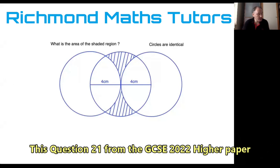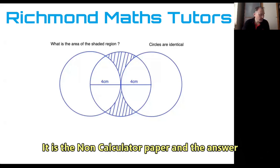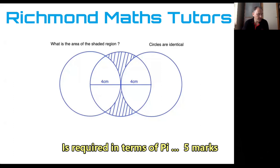This is a circles question from the GCSE 2022 maths higher paper. We've got three identical circles, two of which are placed next to each other just touching, and then the third one is intersecting both of them and passing through the centers of the other two circles.